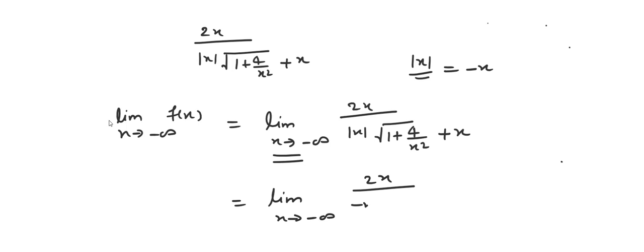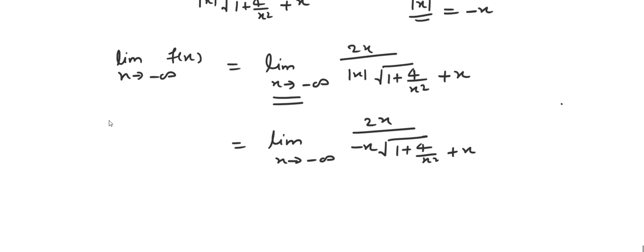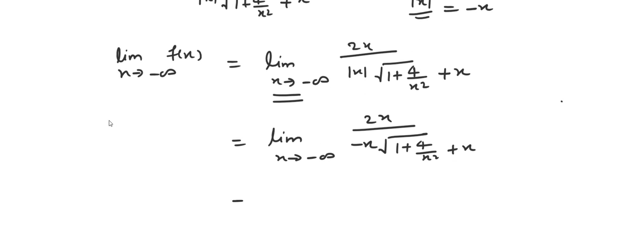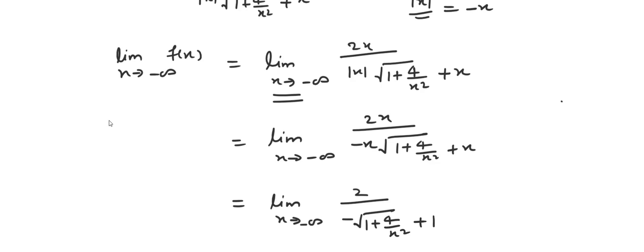As x is negative, we know that mod of x equals minus x. So that means this term can be written as the limit x goes to minus infinity of 2x over minus x times root over 1 plus 4 over x squared plus x. We can cancel x, and we obtain the limit x goes to minus infinity of 2 over minus root(1 plus 4 over x squared) plus 1.